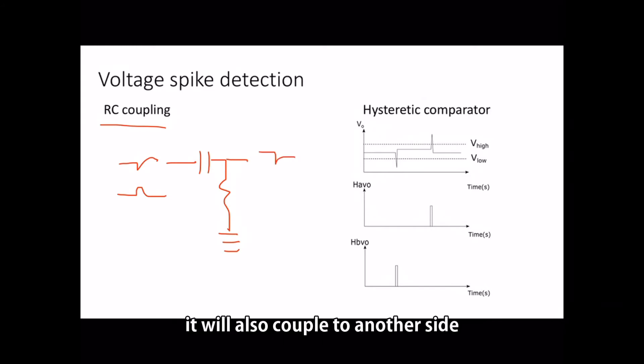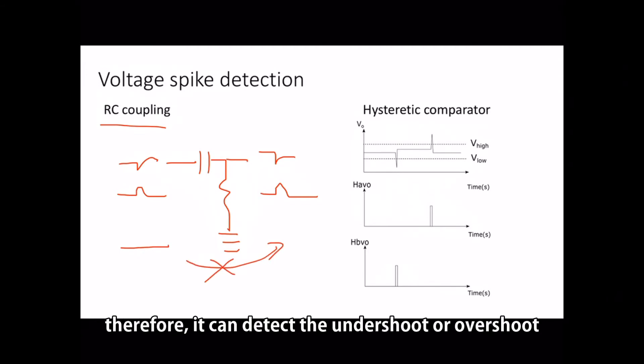If undershoot occurs or overshoot occurs, it will also couple to another side. If just a DC voltage, it cannot pass through. Therefore, it can detect the undershoot or overshoot.